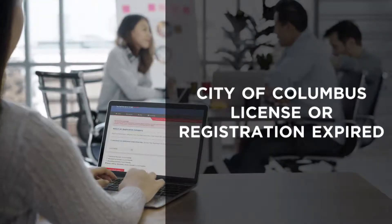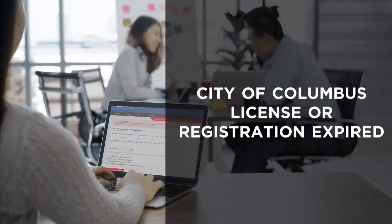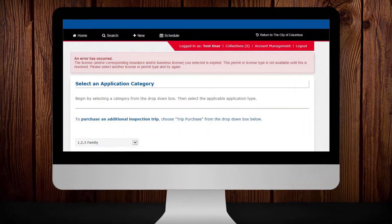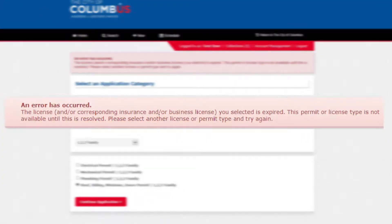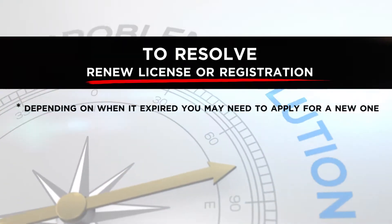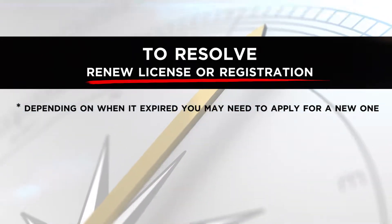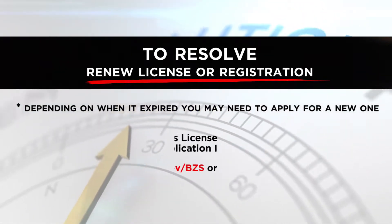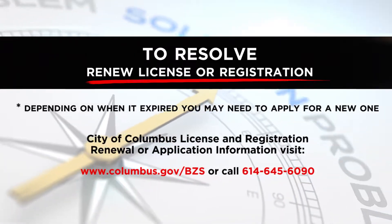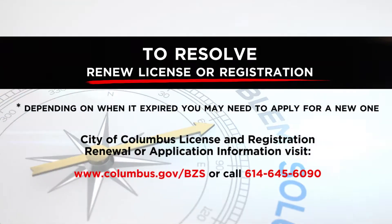City of Columbus License or Registration Expired. When your City of Columbus License or Registration has expired, this notice will appear on the screen. To resolve this issue, you will need to renew your license or registration, or depending on when it expired, you may need to apply for a new one. To learn more about the renewal or application process, visit columbus.gov/bzs or call our customer service center at 614-645-6090.